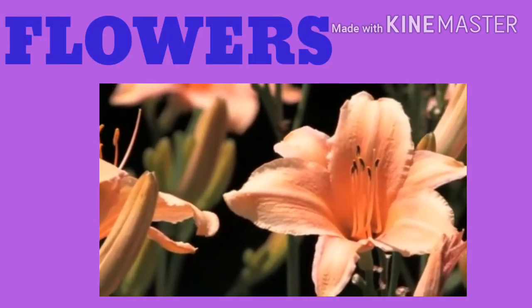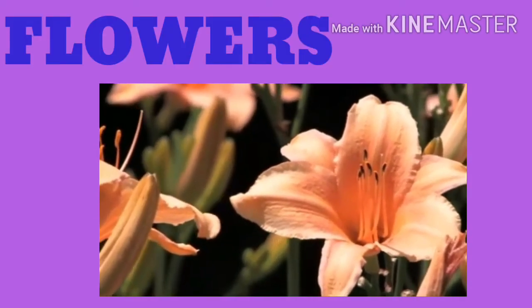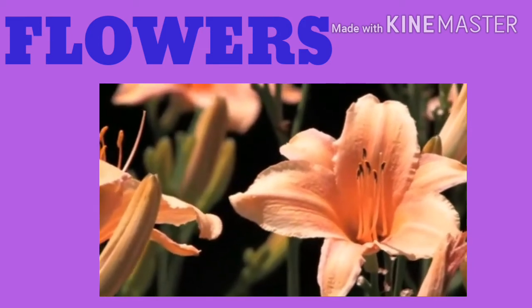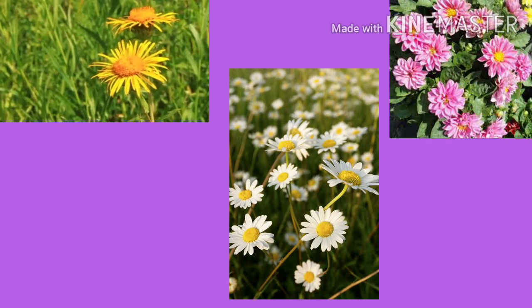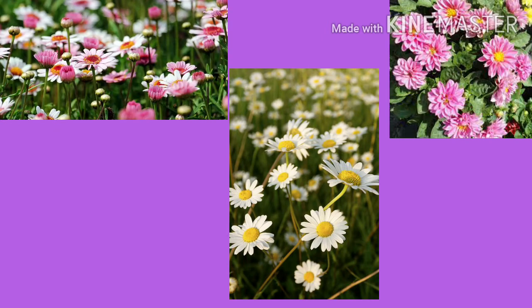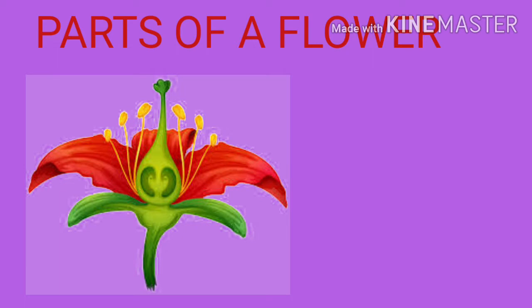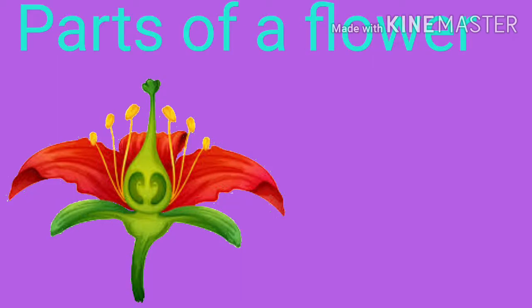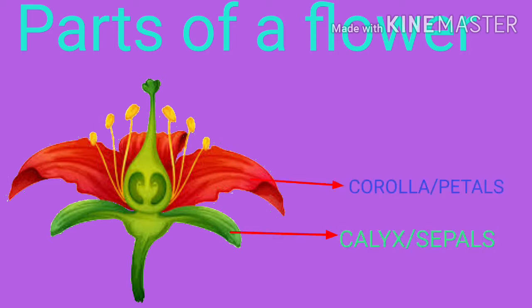Flowers are the most beautiful parts of a plant. They are found in different colors with different fragrances. Basically, a flower contains four parts. Coming to the parts of a flower: it contains calyx or sepals, corolla or petals, androecium,